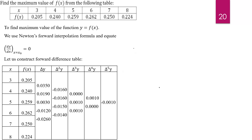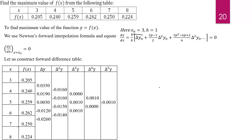Here, h (step size in x) is 1 and x₀ (the initial value) is 3. The first order derivative formula is 1/h times [first order forward difference y₀ + (2p − 1)/2 × second order forward difference y₀ + (3p² − 6p + 2)/6 × third order forward difference y₀ + ...] = 0.